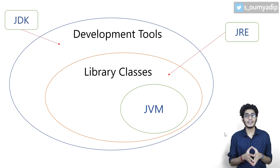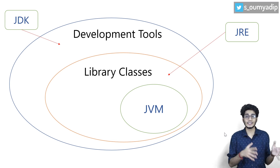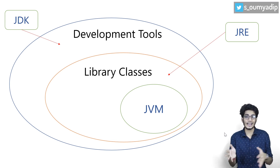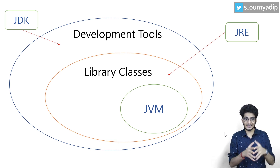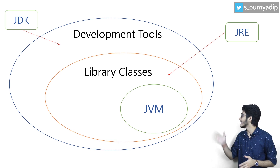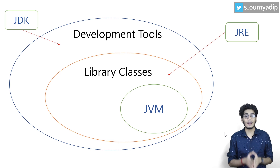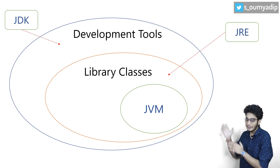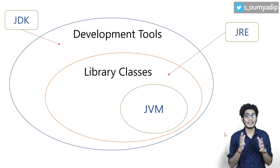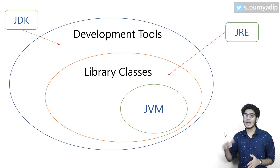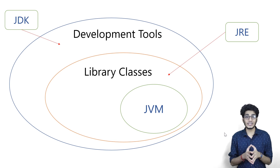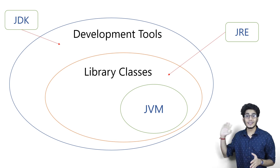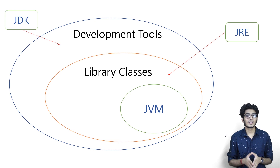If you have the JDK, do you have the JRE? Yes, you have the JRE. Interviewers often ask you about the difference between JDK and JRE. If you have the JDK, then you have everything — you have the development tools, you have the library classes and you have the JVM. If you have only JRE, then you will only have the library classes and JVM. You cannot have JVM explicitly because JVM doesn't physically exist, so you must have JRE to have JVM.